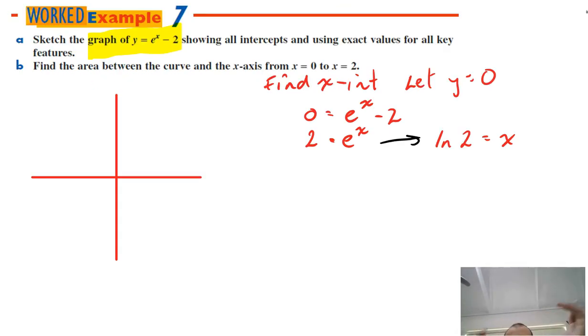I can write that in logarithmic form and I can say that that is ln2 equals x. Now ln2, you can put it in your calculator. It's like 0.6 something rather, not that it matters. That's going to be my x-intercept. So I'm just going to put it in here, ln2.